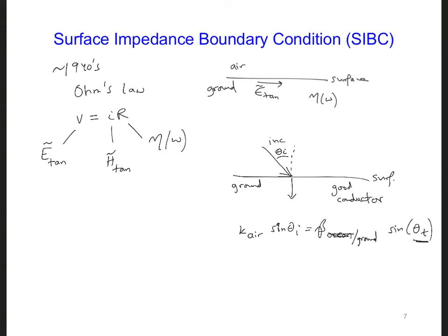If we plug in values, theta t is going to be pretty close to 90 degrees, so it's going to propagate straight downwards. Sorry, zero degrees, so it'll propagate straight downwards relative to the normal.